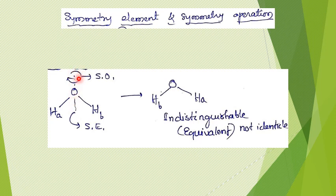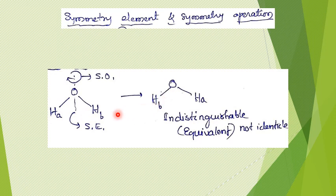If we rotate the molecule on this axis by 180 degrees in the clockwise direction, we get a different orientation of the molecule. To understand the different orientations, I have labeled the hydrogen atoms as H-a and H-b — both are hydrogen atoms, just to distinguish them. After rotating by 180 degrees, H-a takes up H-b's position and H-b takes up H-a's position, so the orientation of the molecule changes.